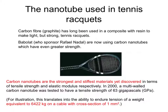Carbon nanotubes, with their light structure and their incredible strength, are used in tennis rackets. Babolat, who sponsor Nadal, are now using these carbon nanotubes to give strength to the tennis rackets and yet give the tennis racket its lightness as well. A one square millimetre thickness of carbon fibre could in theory hold around six and a half tonnes of weight. So they are incredibly strong, much stronger than steel.